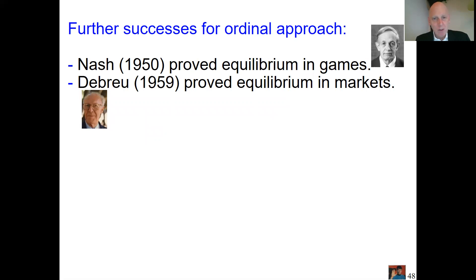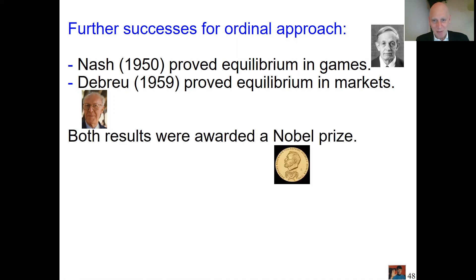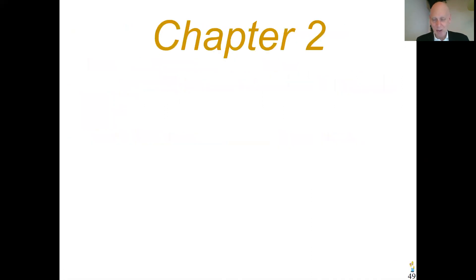Debreu proved that with all kinds of market activity — buyers, sellers, prices — an equilibrium will always exist in market models, also using ordinal tools. This formalized Adam Smith's invisible hand: the market itself finds equilibrium prices, demand meets supply. Debreu also received a Nobel Prize for this. Many good results have come from the ordinal approach, but now we turn to Chapter 2, where all kinds of problems start appearing — especially empirical problems — which will be covered in the next recording.